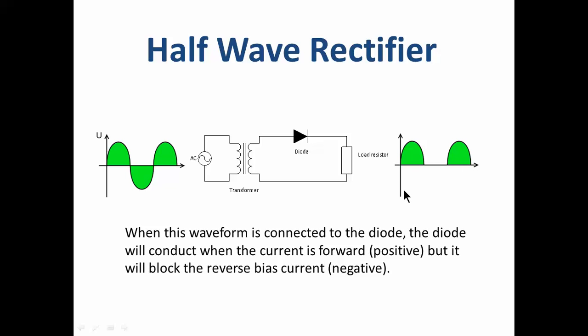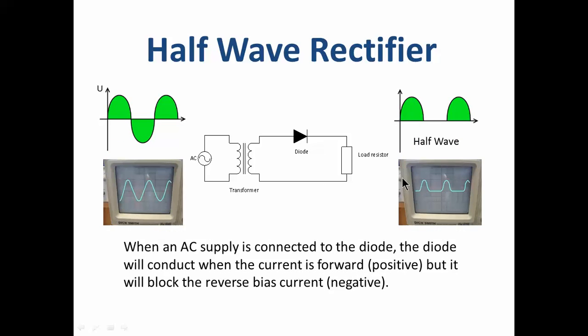So when it's connected to the diode, the diode will conduct when the current is forward positive but will block the reverse bias current negative and we get half-wave. This is what it would look like on an oscilloscope. There's our full-wave input and there's our half-wave rectification.